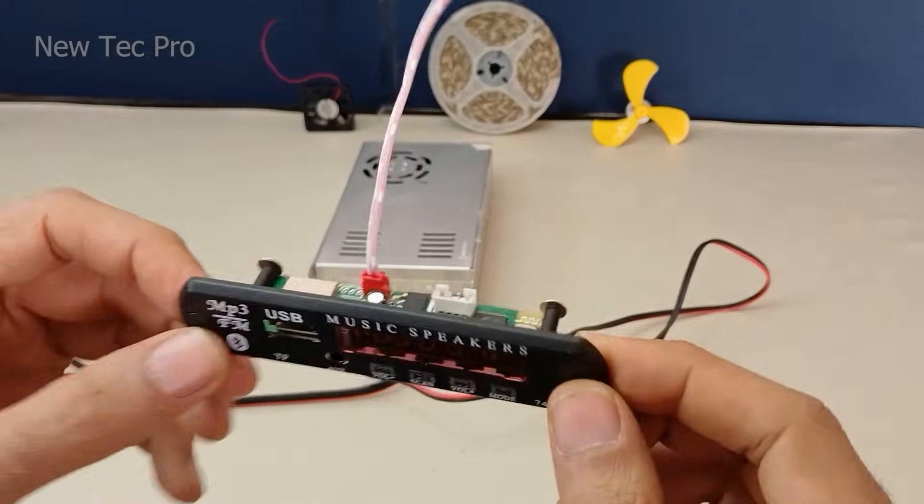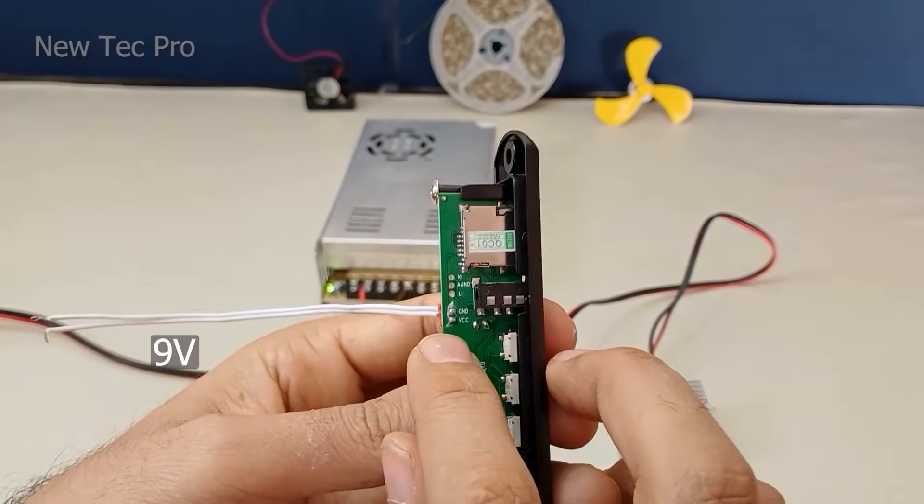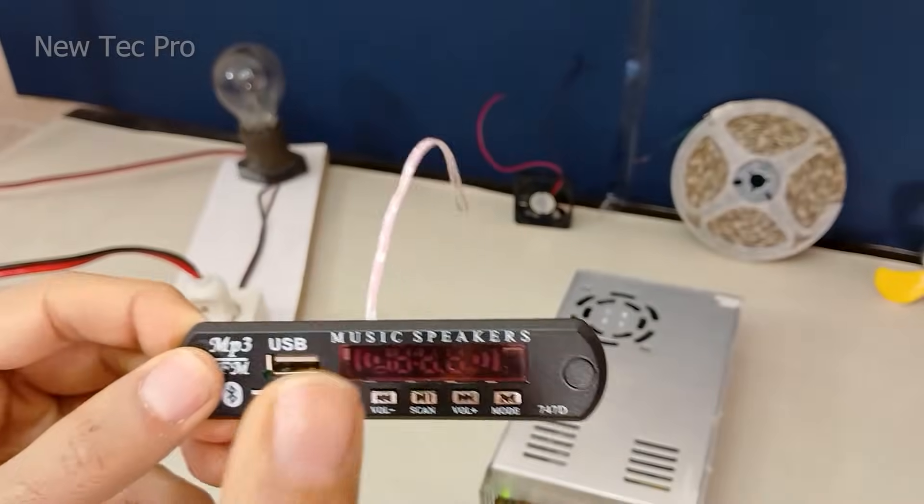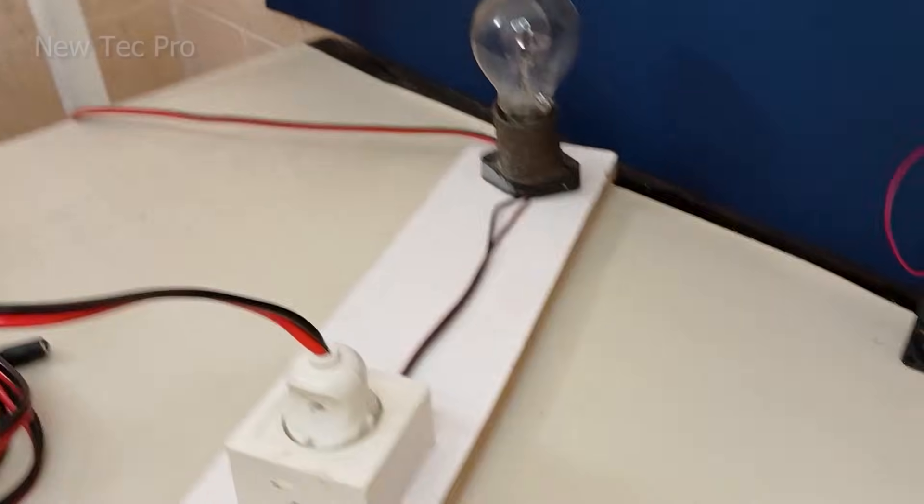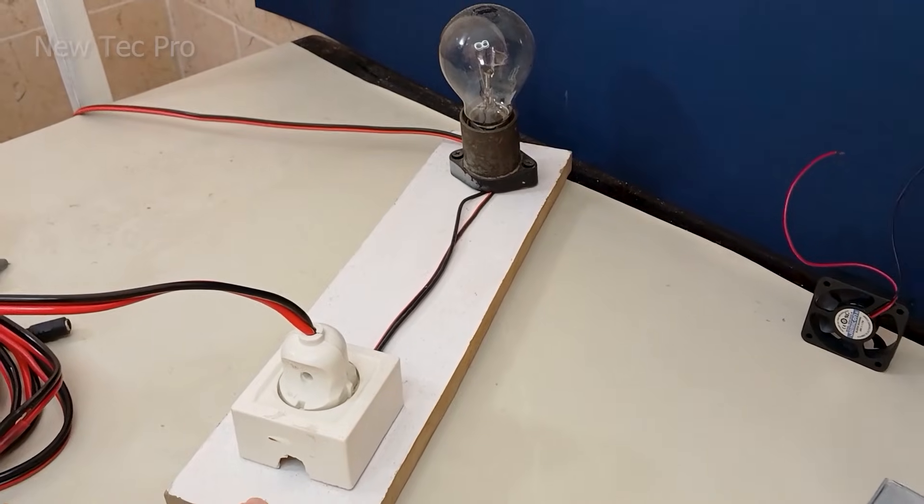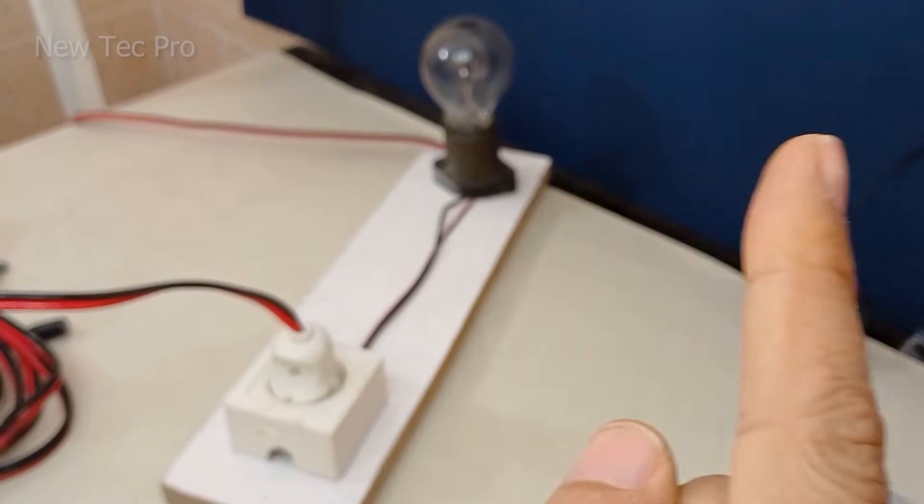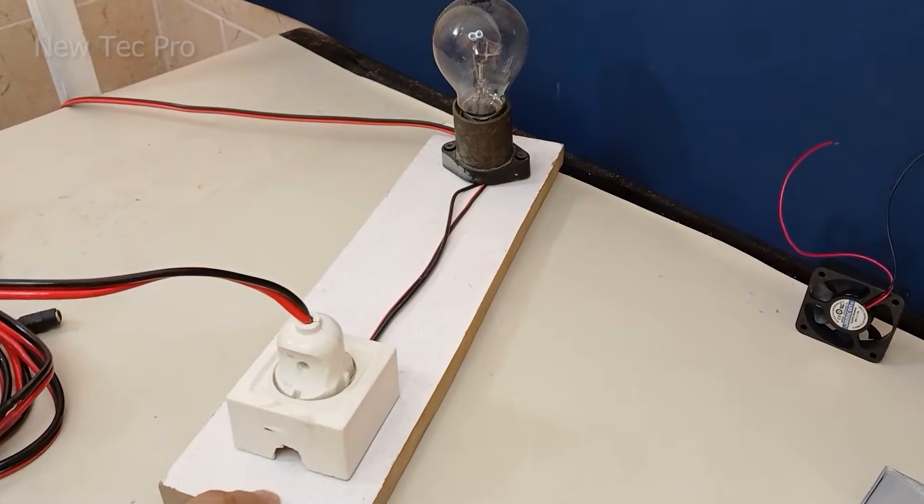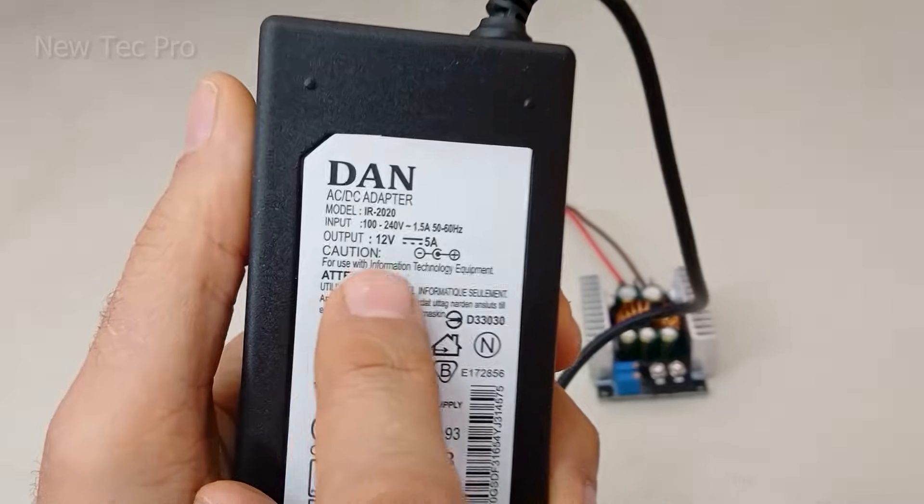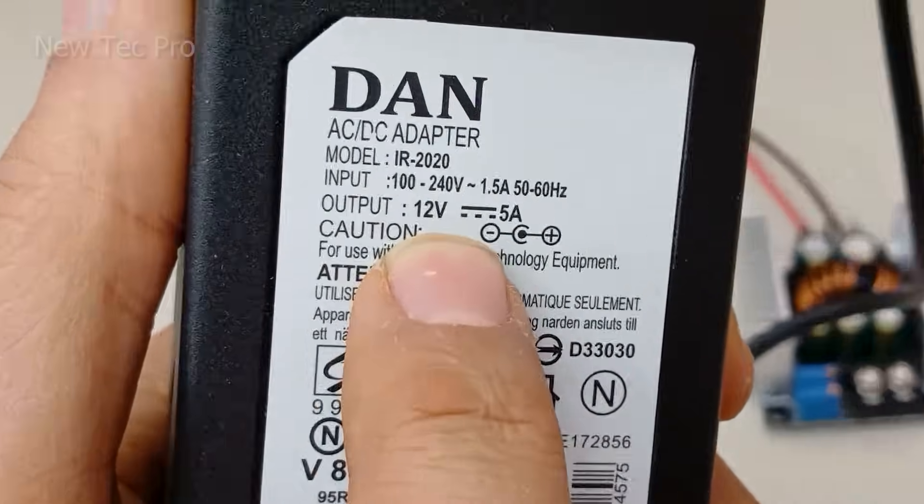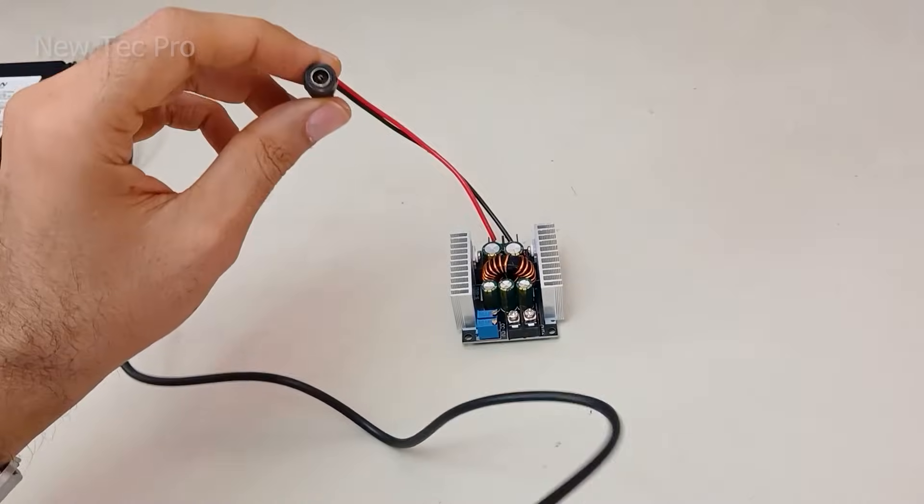Now finally, the MP3 decoder module. It's a 9 volt input. Before I start the test, be sure to make this connection. Very important. Watch this video on New Tech Pro channel. For this test and example, I use a 12 volt AC-DC adapter by this plug input.